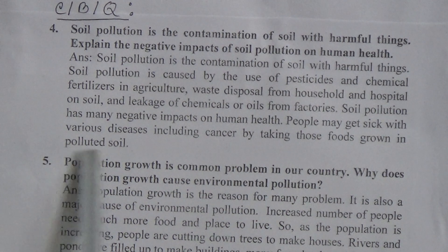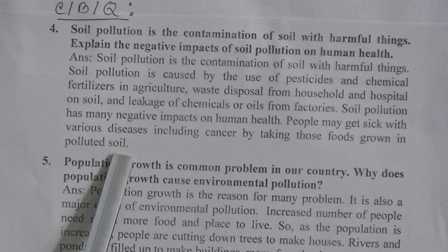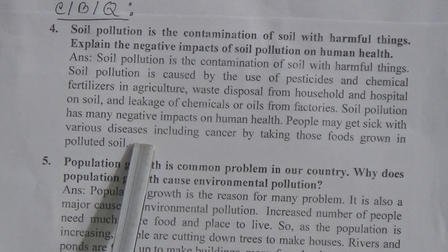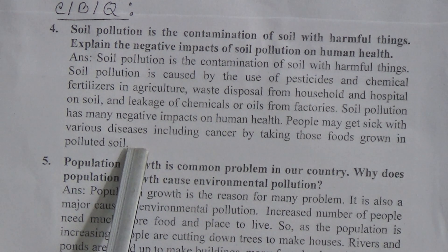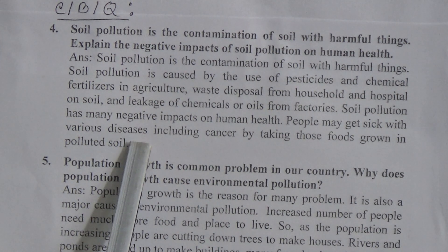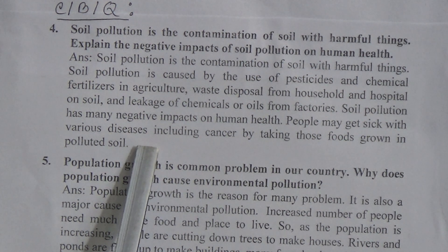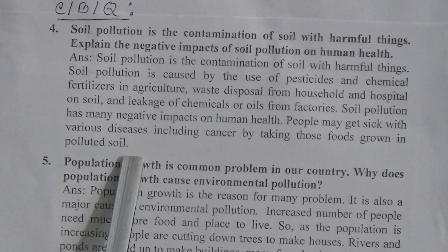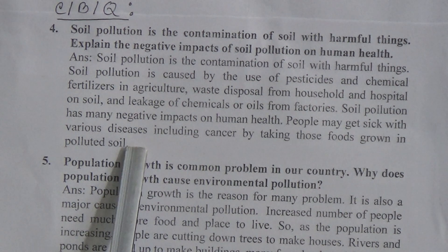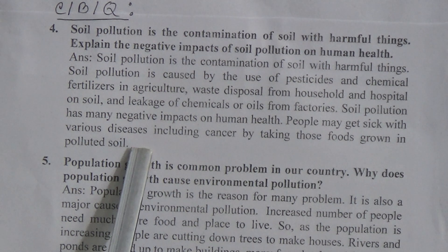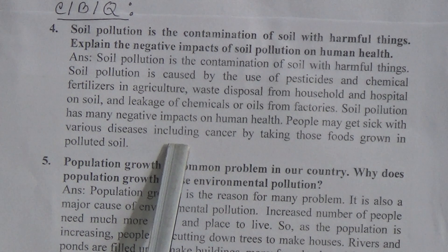When soil gets polluted with harmful materials, harmful chemicals mix into the soil. A portion of those pollutants gets absorbed by plants growing in that polluted soil. From the plants, the chemicals pass into crops and fruits. When we eat those fruits and crops, the chemicals enter our body and cause various diseases including cancer.